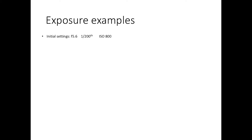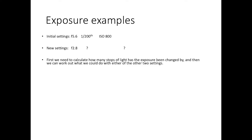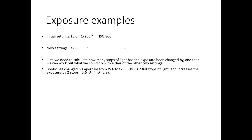Bobby's initial settings were F5.6, 1/200th of a second, and ISO 800. He changed his aperture to F2.8. Looking at our aperture chart, F2.8 is half of F5.6, with F4 sitting between them, so that's a change of two full stops of light. Because the aperture has widened by two full stops — letting in more light — we need to cut out two stops of light from at least one, or a combination of both, the shutter speed and the ISO.